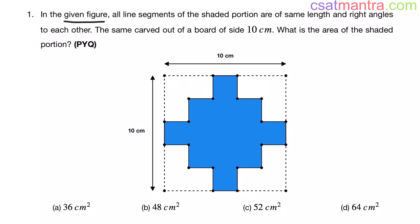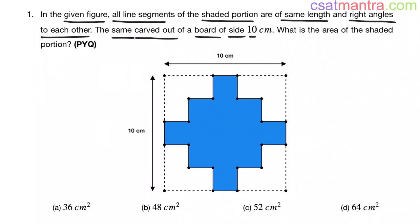In the given figure, all line segments of the shaded portion are of same length and at right angles to each other. The shape is carved out of a board of side 10 centimeters. What is the area of the shaded portion? This is a previous year question from the geometry chapter.